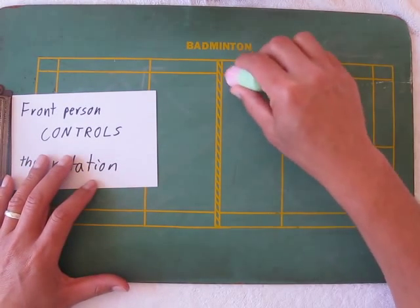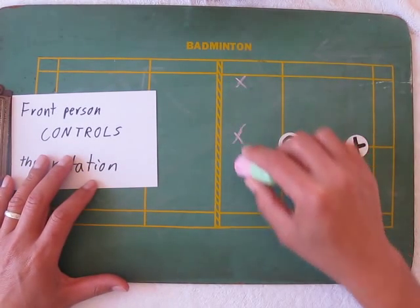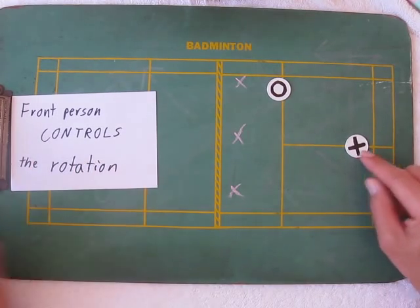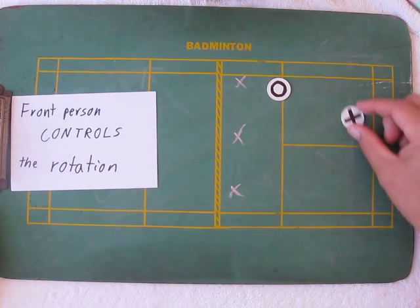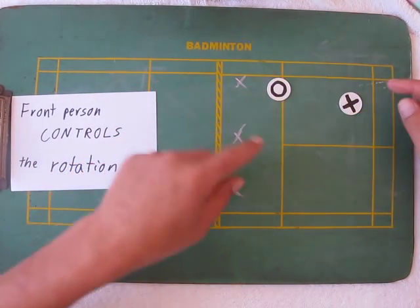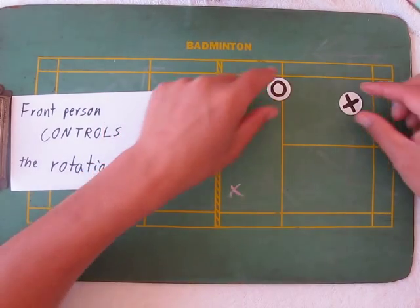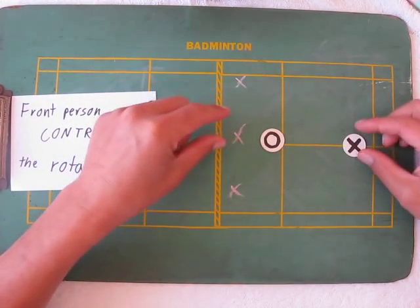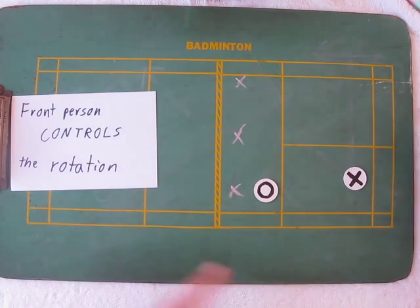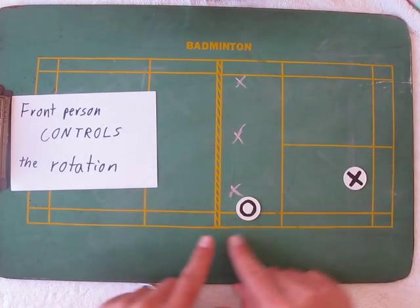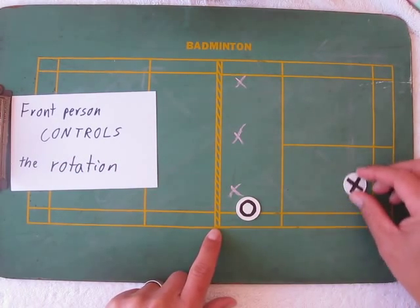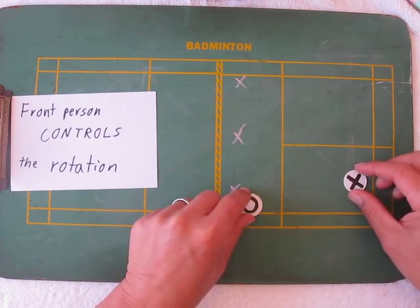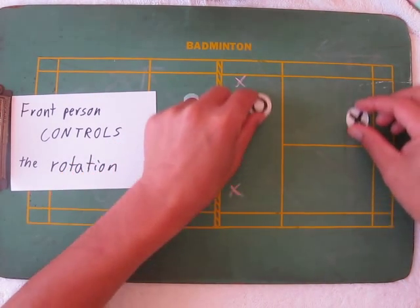As long as the bird is at the net and the front person moves, the back person must shadow. So if the bird is here, you go here; bird here, you go here. If you're playing the very sideline, you're not here — you're kind of here. So three positions: here, here, and here.